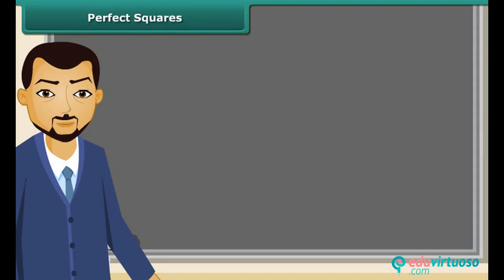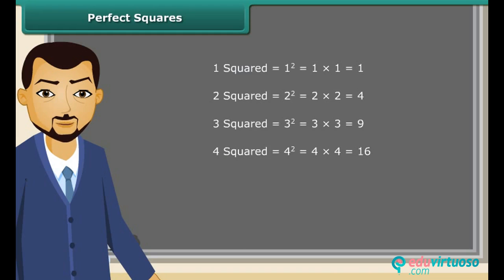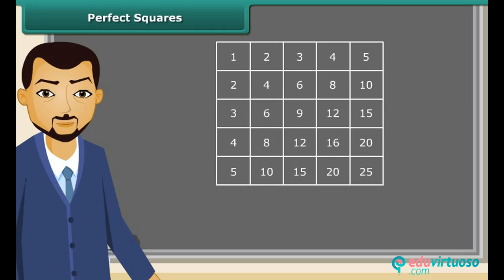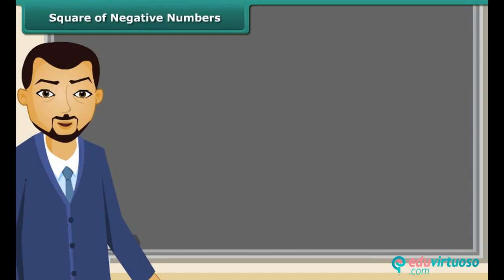Let us read: 1 square is 1, 2 square is 4, 3 square is 9, 4 square is 16, 5 square is 25 and so on. We can also find squares on the multiplication table. Do you know what do we call these numbers? They are called perfect squares. The perfect squares are the squares of the whole numbers.